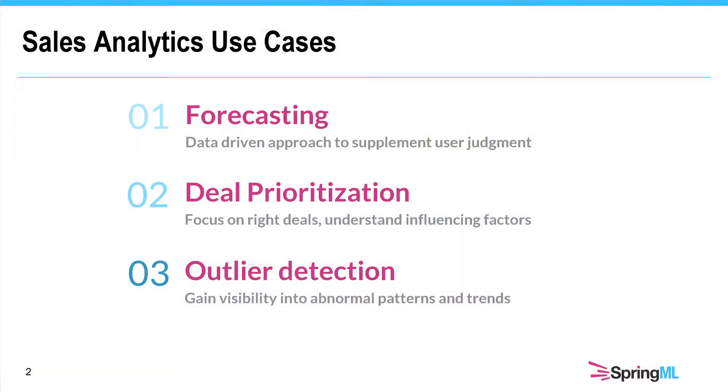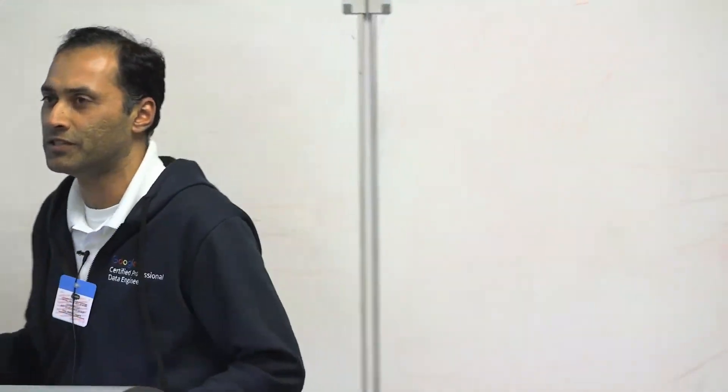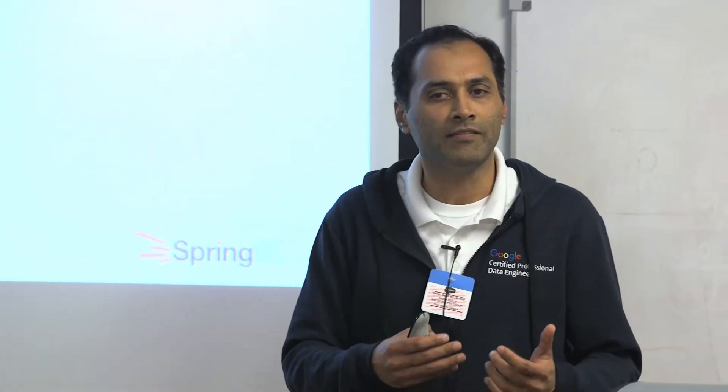For our sales analytics use cases, where we apply machine learning, we focus on forecasting, deal prioritization, and outlier detection. Forecasting is the act of predicting what a company might do in the next 12 months. Typically, companies have a pretty good handle on the current quarter, but as the horizon looks further into the future, it becomes more and more difficult — and that's where a machine learning algorithm can do a better job.